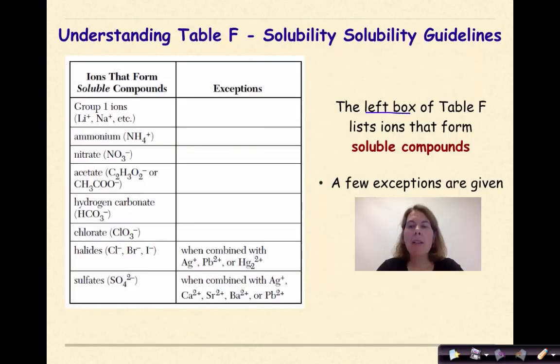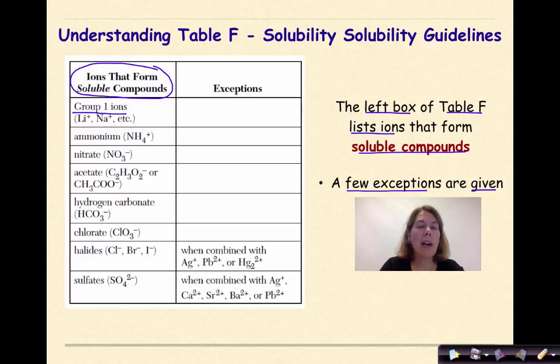The left box on table F lists ions that form soluble compounds, but there are a few exceptions that are given. We are looking at ions which, if they are in a compound, when they are placed in water, they will dissolve. This includes all group 1 ions, like lithium and sodium, ammonium, and be careful with ammonium. That's not ammonia. Ammonia is NH3. This is the ion, ammonium.